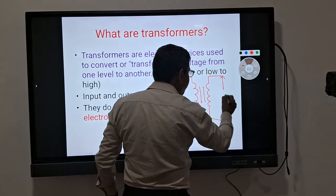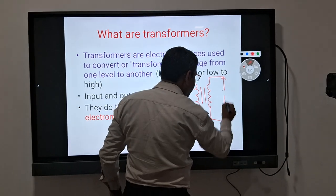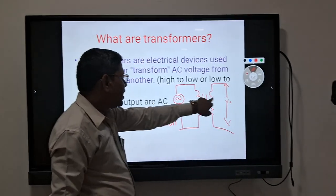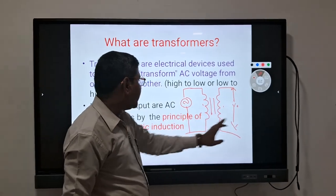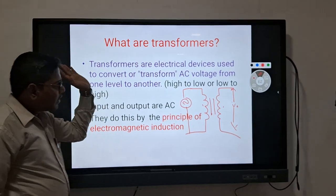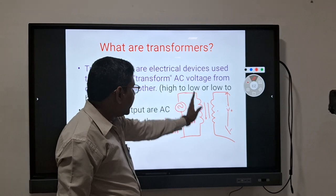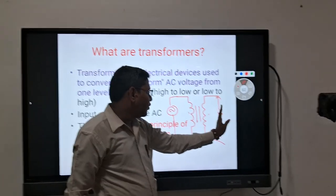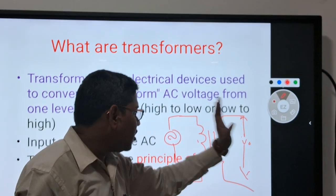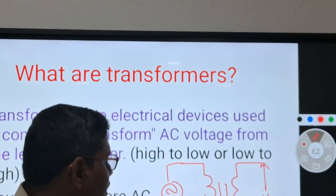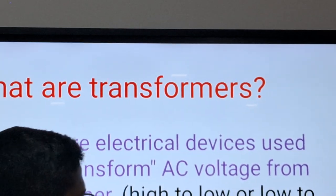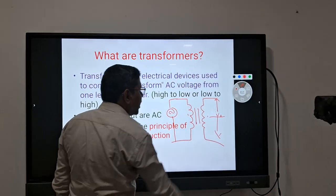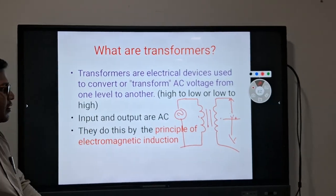A transformer transfers energy from one circuit to another. One circuit is the primary circuit, where we give input supply to the winding — that is called the primary winding. The winding that gives the output voltage is called the secondary winding, and from the secondary circuit we get the output voltage.